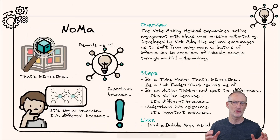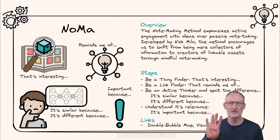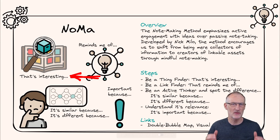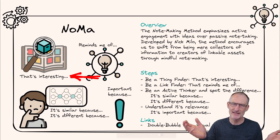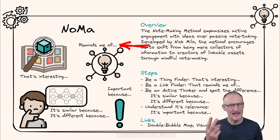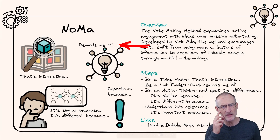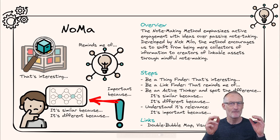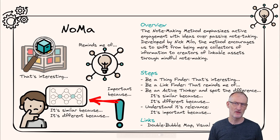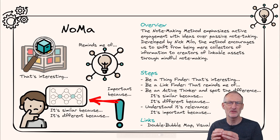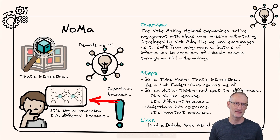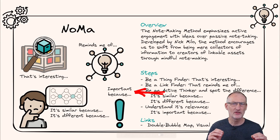NOMA stands for note making and consists of four steps. First, be a think finder — notice when you think, 'hmm, that's interesting.' Second, be a link finder and ask yourself, 'this idea reminds me of...' Third, be an active thinker — spot the difference and note down similarities and differences. Finally, understand the importance — complete the sentence: 'It's important because...'